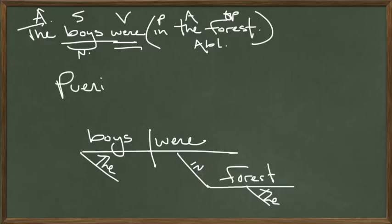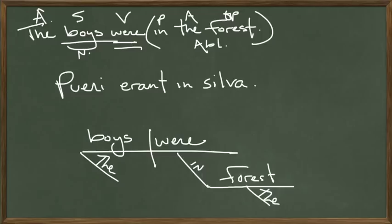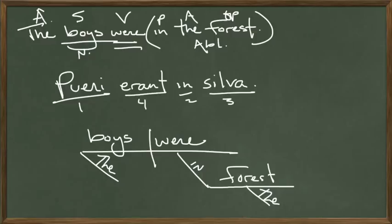Boys — Pueri. Even though my male students hate this, this is where we get the English word 'puerile,' which means immature and childish. Sorry guys. Pueri erant in silva. And silva is where we get Sylvia, Sylvester, Transylvania, Pennsylvania. Bad Latin word order again of course — we change this to: Pueri in silva erant.